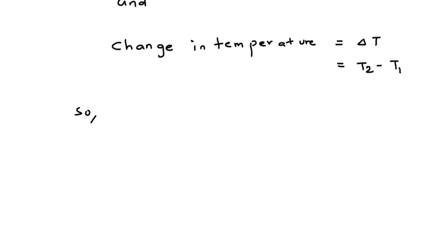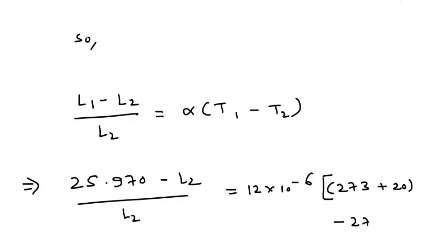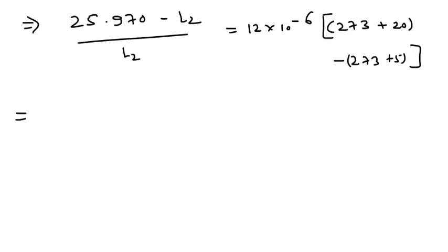So I am putting the value in that equation. So we can write it like L1 minus L2 by L2 is equal to α times T1 minus T2. So I am just putting the given value of L1 here, as well as α, as well as T1 and T2, by first changing it into Kelvin.